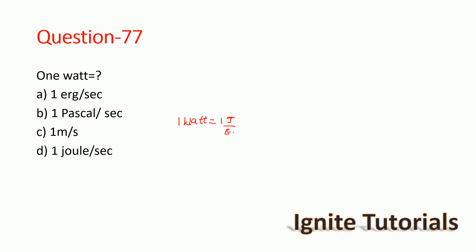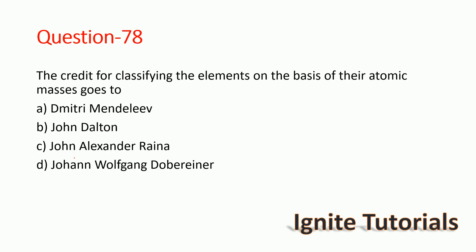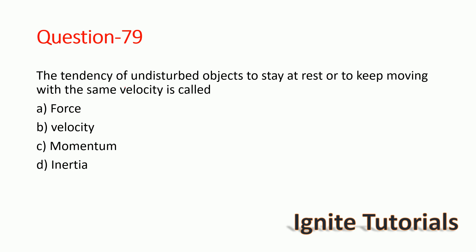Question 76: What is one watt? One watt is exactly equal to one joule per second — it is a unit of power. Question 77: The credit for classifying elements on the basis of atomic masses goes to whom? The correct answer is Dmitri Mendeleev — option A is correct.